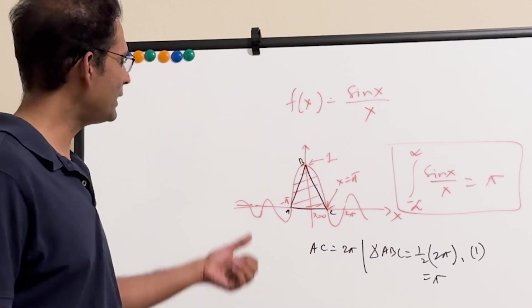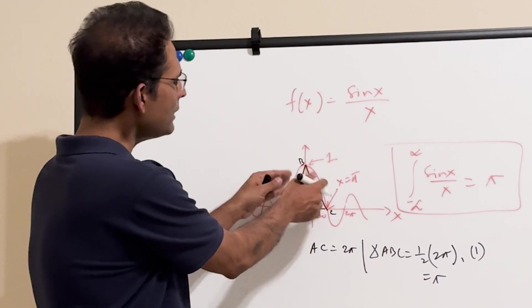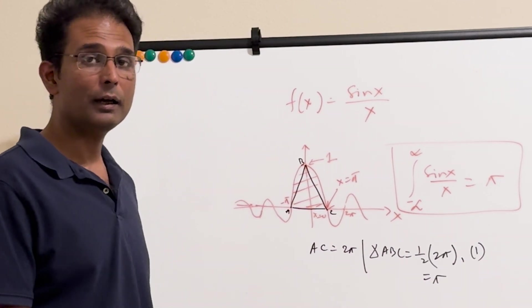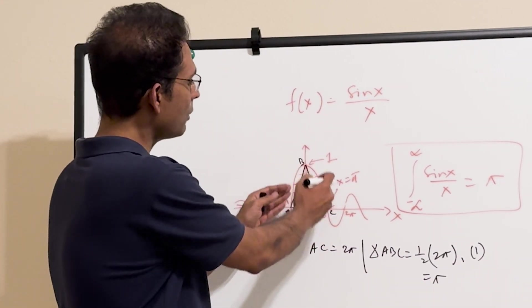So this triangle has the same area as this integral. And you can see that the triangle is slightly shorter in area than that of the main lobe, right? And that makes sense, because this main lobe is positive...